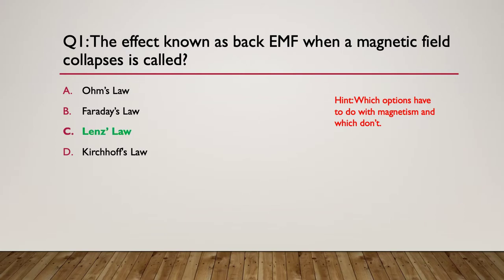So here's the answer: the answer is Lenz's law. So A. Ohm's law only has to do with voltages, resistances, and currents. Faraday's law applies to some things we do in electromagnetism but it doesn't apply to EMF or back EMF. The correct answer was Lenz's law, and of course Kirchhoff's law - we've got Kirchhoff's current laws and voltage laws, but again nothing to do with magnetism.